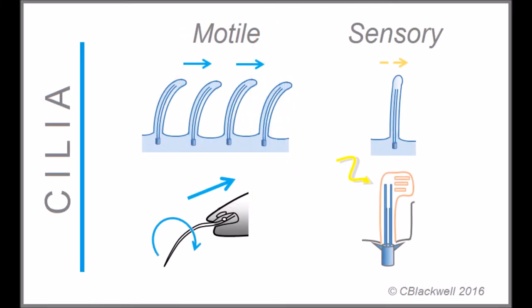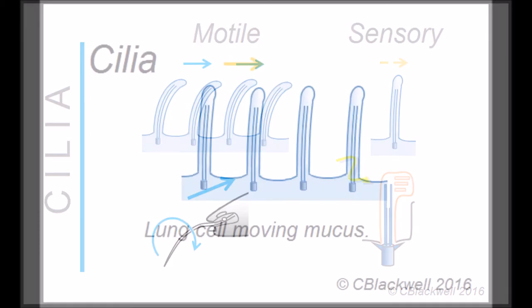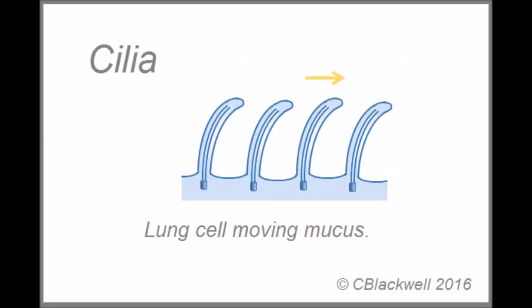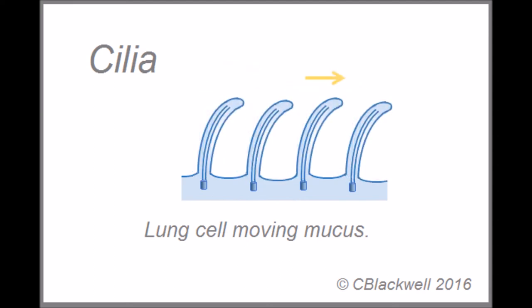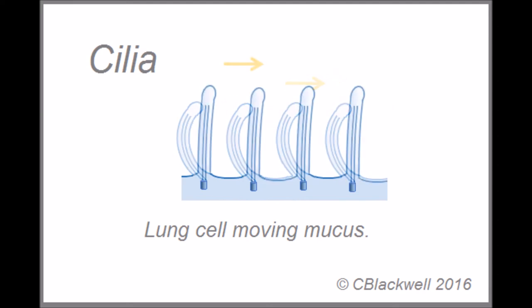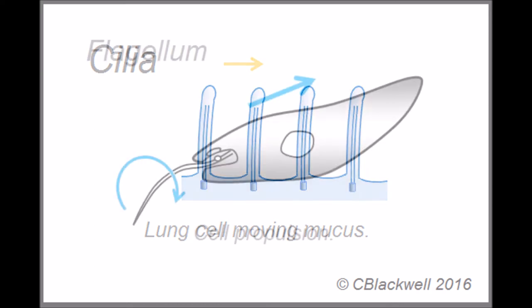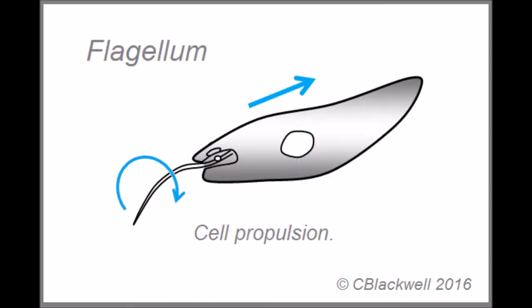It turns out that most mammalian cells have some kind of cilia structure. Some cilia can move, like in the bronchial tract, several moving in concert to sweep mucus and debris from the lining of the respiratory passageways, or like flagella for propelling a cell.